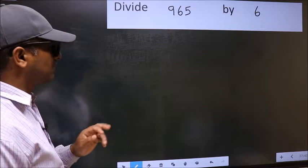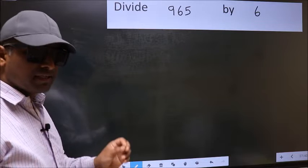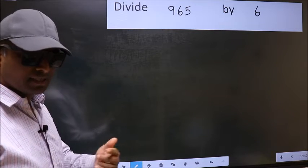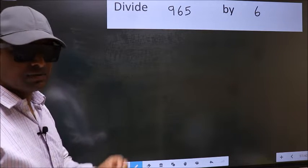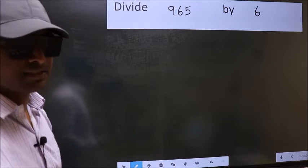Divide 965 by 6. While doing this division, many make this mistake. What is the mistake that they make? I will let you know. But before that, we should frame it in this way.